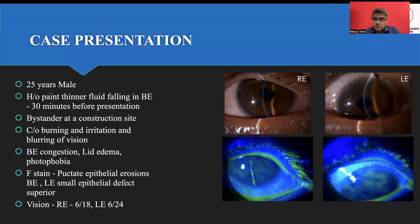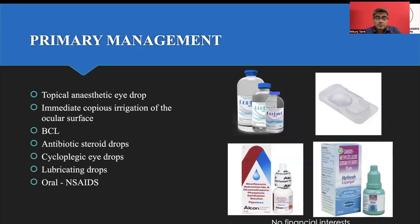On fluorescein staining, punctate epithelial erosions were seen all over the cornea, with loose epithelium on the right eye lying on the ocular surface. There was a small epithelial defect on the right eye but zero clock hours of limbal involvement and the conjunctiva was also healthy. His vision was 6/18 in the right eye and 6/24 in the left eye.